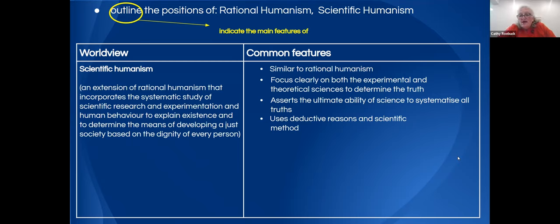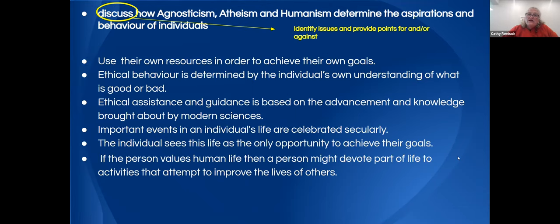We're asked to discuss how agnostics, atheists and humanists determine the aspirations and behaviours of individuals. They use their own resources to achieve their own goals. Ethical behaviour is determined by an individual's own understanding of good and bad. Ethical guidance is based on advancement in knowledge brought about by modern science. Important events in an individual's life are celebrated secularly, and this life is seen as the only opportunity to achieve their goals.